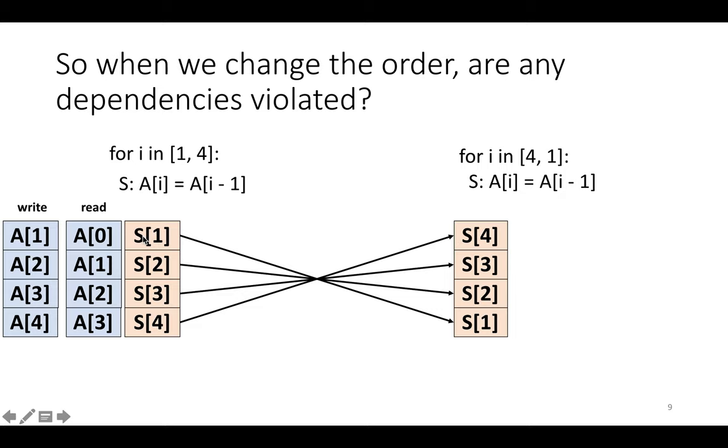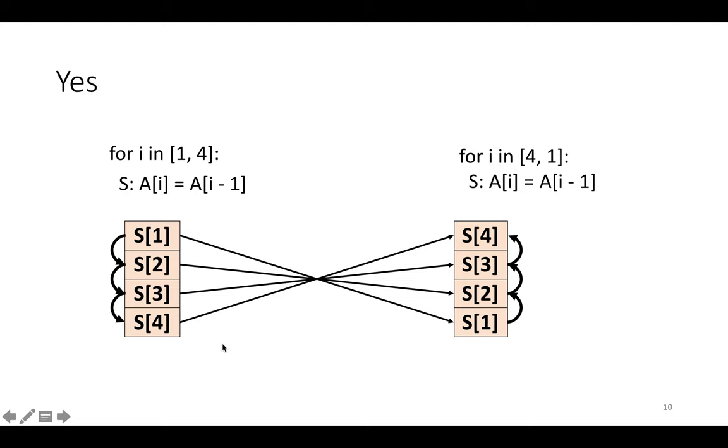So we can think of statement 1 as actually sending data through the location a1 to statement s2. And we can think of the statement s2 as sending data to the statement s3 through a2. And the statement s3 is sending data to s4 through a3. And we can summarize this by putting these edges on the graph that represent the flow of data from one statement to another.